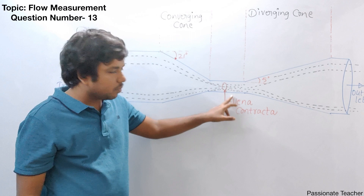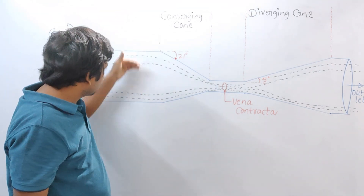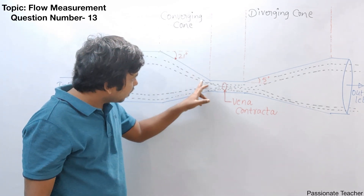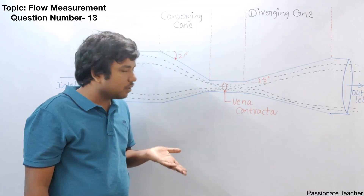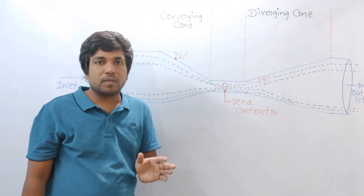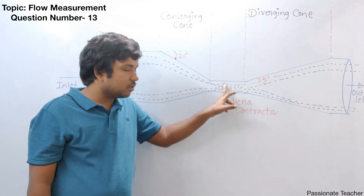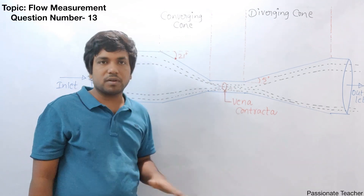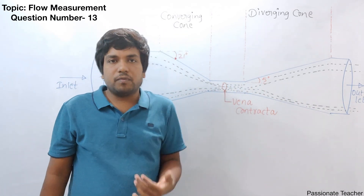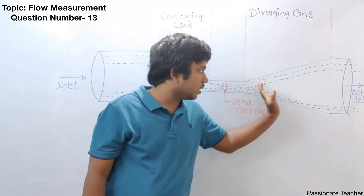Vena contracta means: when the fluid is entering at the inlet, as the area of cross section is very high here, the pressure will be high. While it is entering into the converging cone, slowly the pressure will be less and the velocity will be high. This is the location exactly where the fluid streamlines find a very low area of cross section. The velocity will be very high at vena contracta, and naturally the pressure will be very less. While it is coming back, the liquid will recover pressure — this is called the pressure recovery point, downstream.